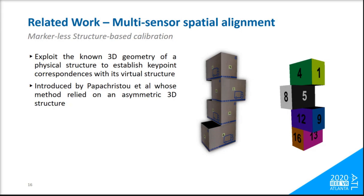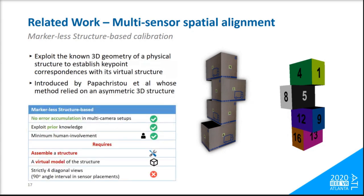They trained a deep convolutional neural network to segment and identify the sides of the structure, and later compute their 3D middle point using it as a 3D to 3D correspondence. While human intervention was minimized, a serious drawback was the limitation of strictly diagonal views, and the support of only 4 viewpoints.